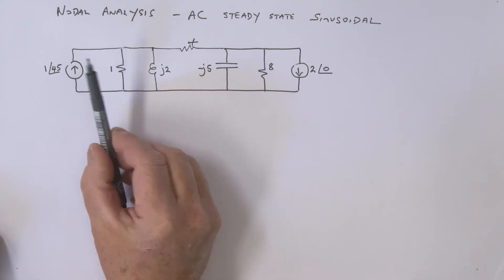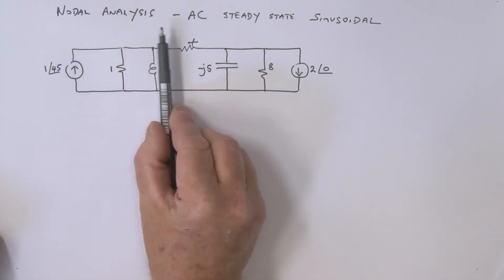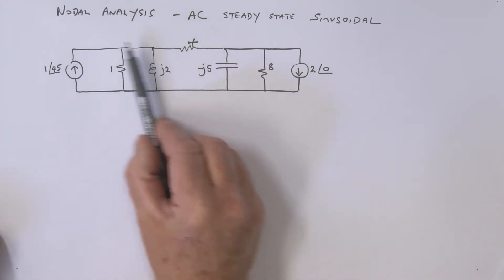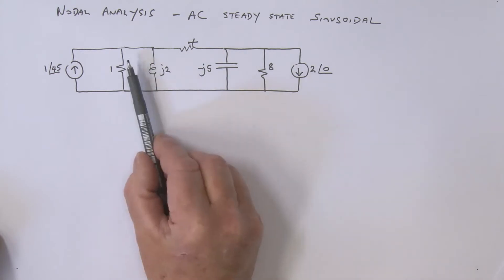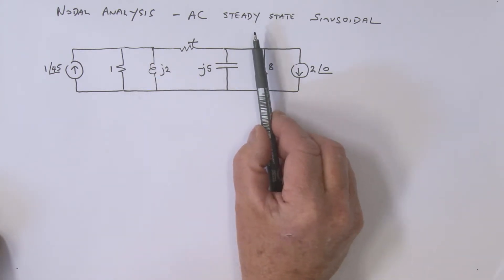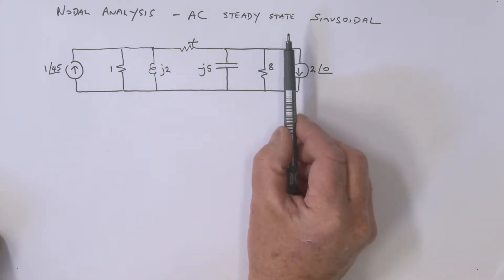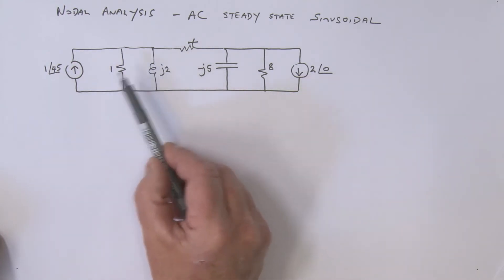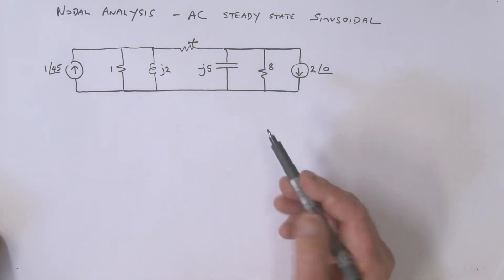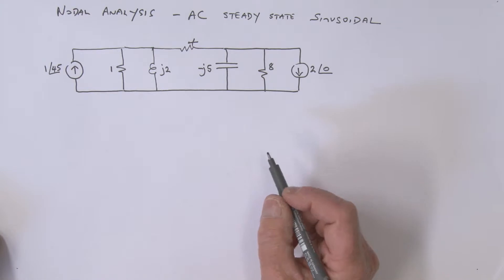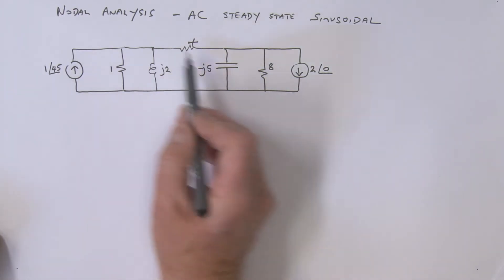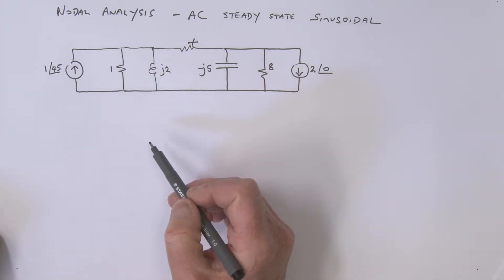What I want to do is talk to you about nodal analysis on an AC circuit. We're assuming a steady-state sinusoidal response, and the values shown here for these sources are RMS values. This circuit lends itself to nodal analysis.